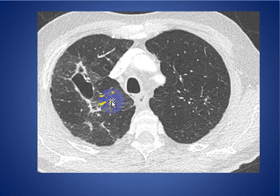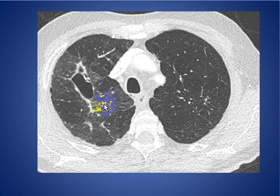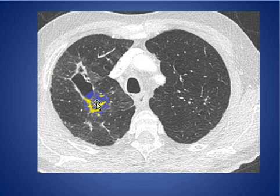This is the same patient after three months of treatment. You can see residual cavity formation in the right upper lobe with a thin wall, some surrounding fibrotic changes, and ground-glass opacity around it.